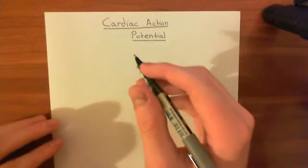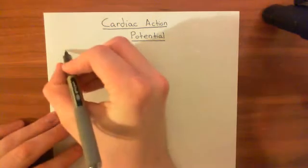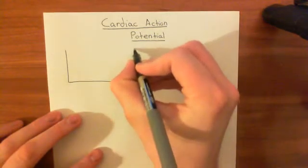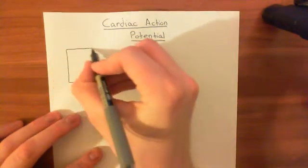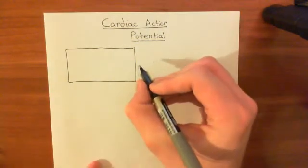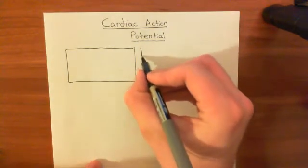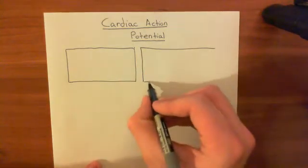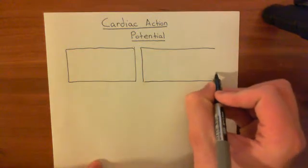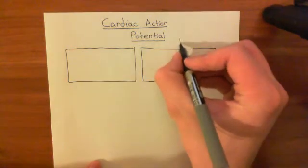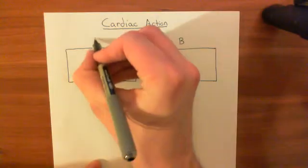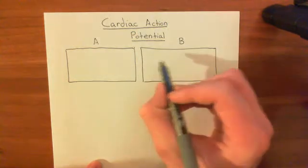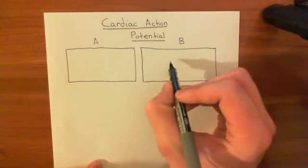Let's start off with the initial depolarization. Let's say we have a cardiomyocyte here, and let's say this cardiomyocyte is already undergoing an action potential. It's going to induce an action potential in its neighbor sitting here. We're going to study the action potential in the neighboring cell — this is cardiomyocyte B and this is cardiomyocyte A. Cardiomyocyte A is already undergoing an action potential, and it's going to spread this action potential to cardiomyocyte B.